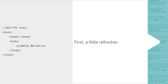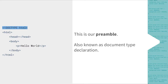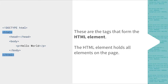First, let's refresh what we went over on the very first day of bootcamp. We have our document preamble, which we always type at the very beginning of every HTML document. This tells the browser that we are writing in HTML5. Right below the document preamble we have the HTML tag, and this is where all of our tags in our HTML document are going to be contained.